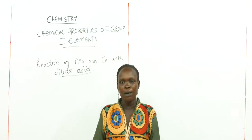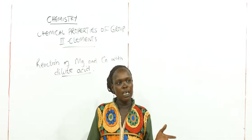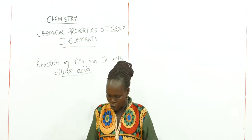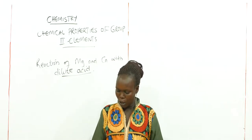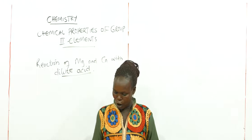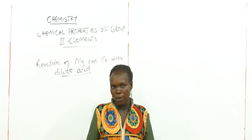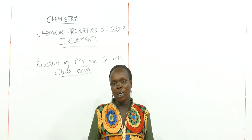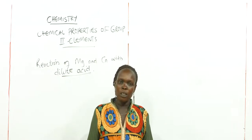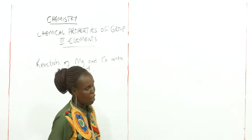Here we are going to talk about the reactions of calcium and magnesium of group 2 with dilute acid. We are going to take magnesium and calcium as the representative elements. Magnesium reacts vigorously with dilute acid and produces a lot of effervescence. The effervescence is as a result of hydrogen gas evolution.